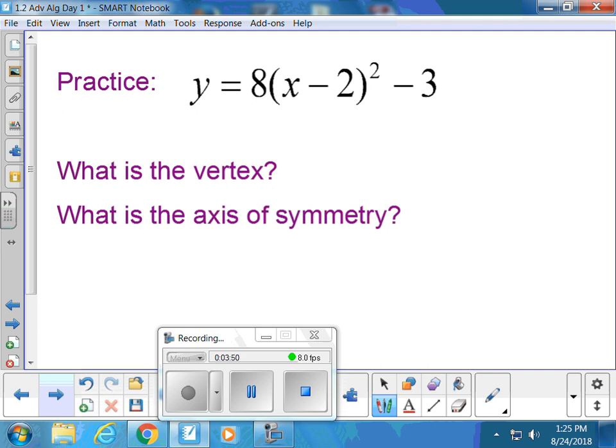Alright. Can I have a volunteer tell me the vertex? Two comma what? Two comma negative three. Okay? So you do want to take the opposite of the number in parentheses, but this number as it is. And can I have another student tell me the axis of symmetry? Olivia? And let's just go with x equals two. If you just say two, I'm like, is it a coordinate? Is it a line? What is it? But when you say x equals two, I know it's that vertical line.